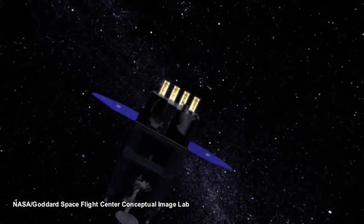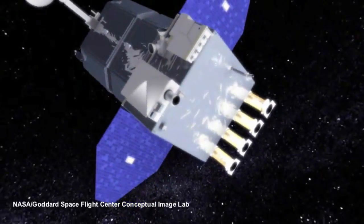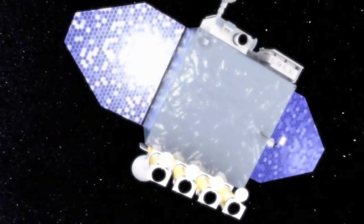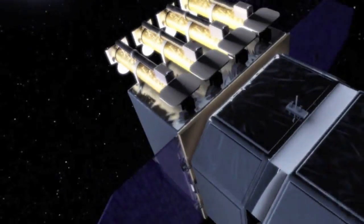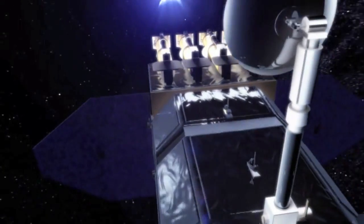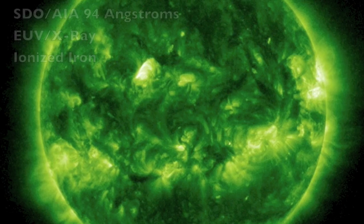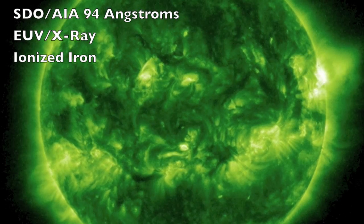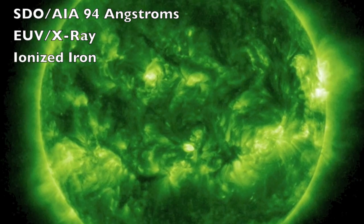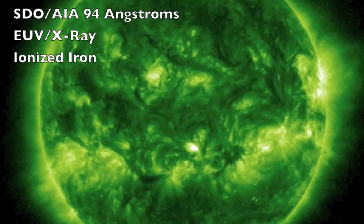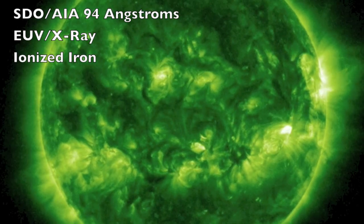Until the GOES-R launches in 2016, the Solar Dynamics Observatory is the best means of looking at the different layers of the sun. Looking mostly in extreme ultraviolet and the X-ray spectrum, the SDO monitors the sun while in orbit above the earth. Looking in 94 angstroms of light, one camera detects the extreme UV and X-ray energy from solar flares, an important element of space weather.